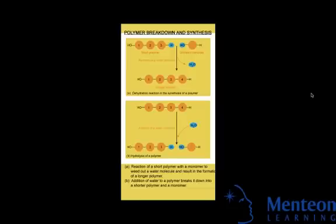During the polymerization process, some chemical groups may be lost from each monomer. For example, on top we see a removal of a water molecule to synthesize a polymer. Addition of water to a polymer can also break it down into a shorter polymer and a monomer, which we see in the bottom reaction.